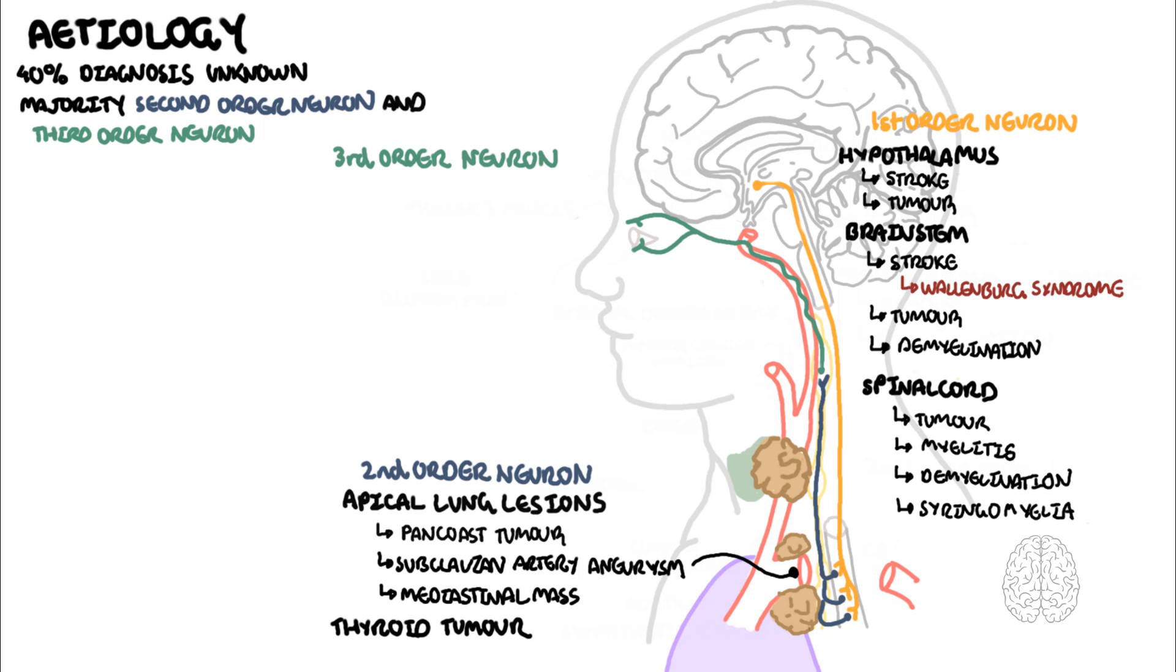Lesions to the third-order neuron can cause Horner's syndrome, but may so with or without anhydrosis. Because remember, the nerve fibers that supply most of the sweat glands come from the superior cervical ganglion and travel along the external carotid artery. It doesn't actually go through the cavernous sinus. And so, lesions of the third-order neuron distal from the internal carotid artery won't really affect sweating that much.